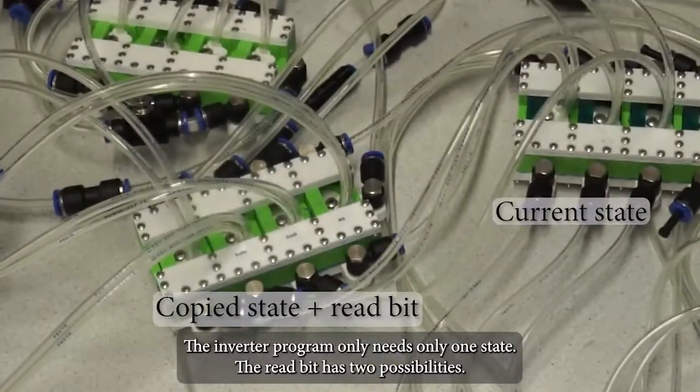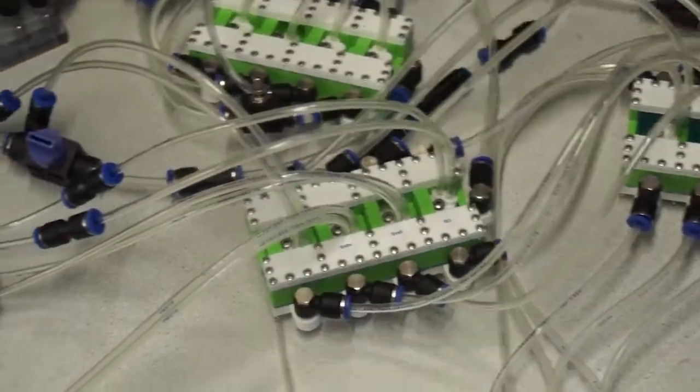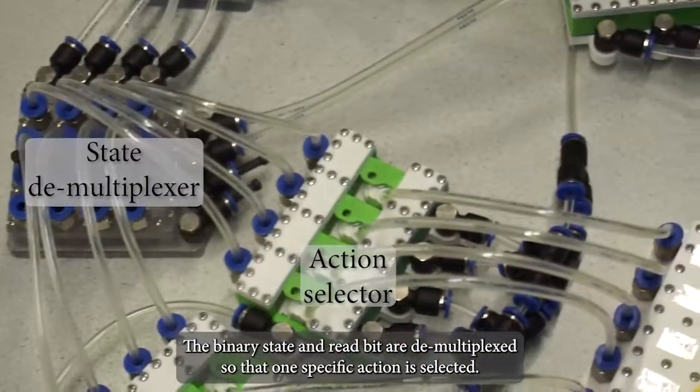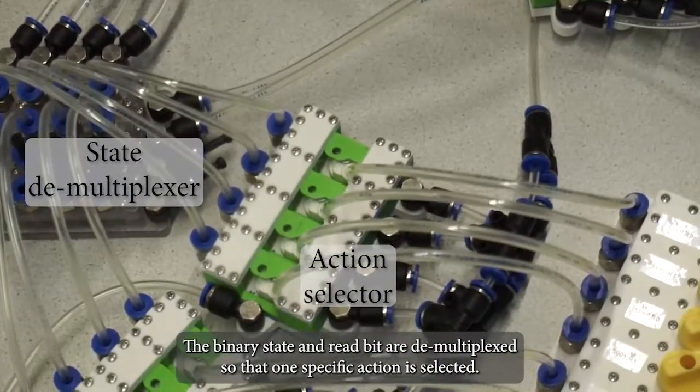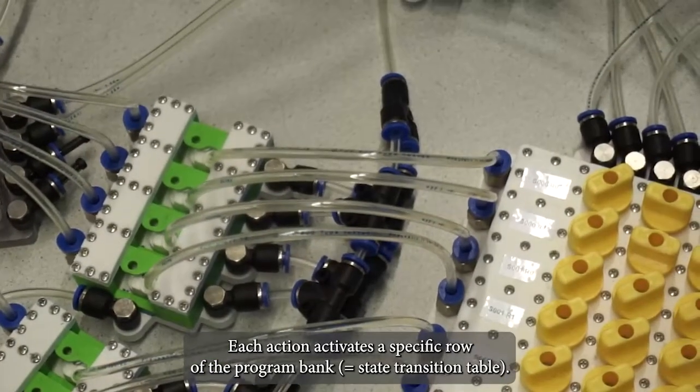The inverter program only needs one state. The read bit has two possibilities. The binary state and read bit are demultiplexed so that one specific action is selected. Each action activates a specific row of the program bank.